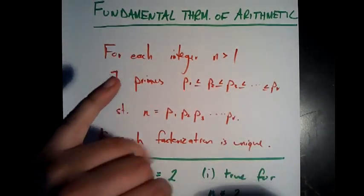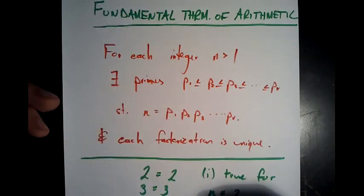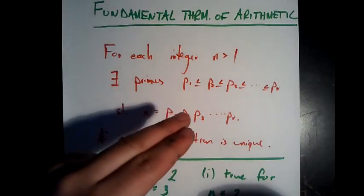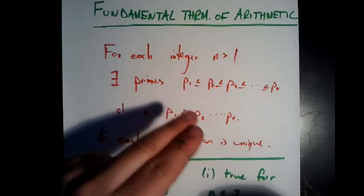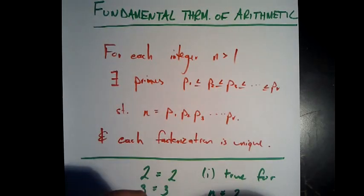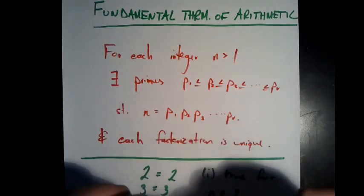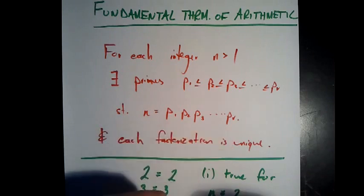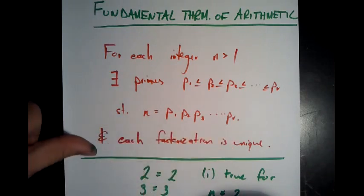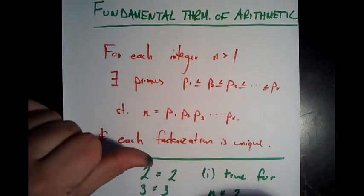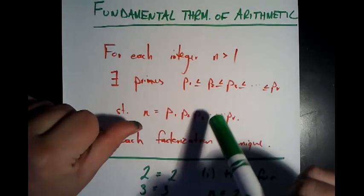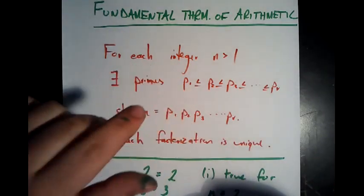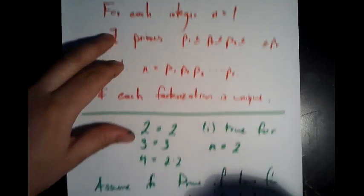Reading it: for each integer n greater than 1, there exist primes p1 less than p2 less than p3, all the way up to p sub r, which is the largest prime we need, such that n equals the product of all those primes. Furthermore, each of these factorizations — each list of products — is unique. There's no other number that shares that list.